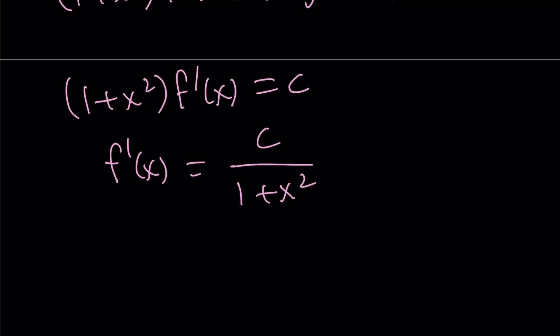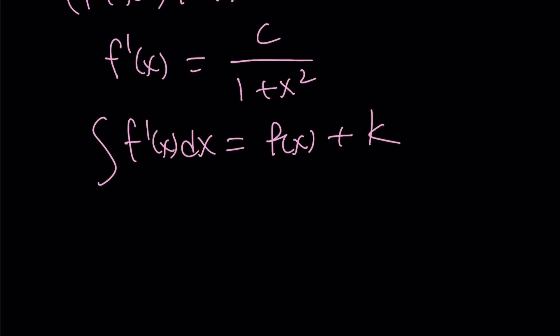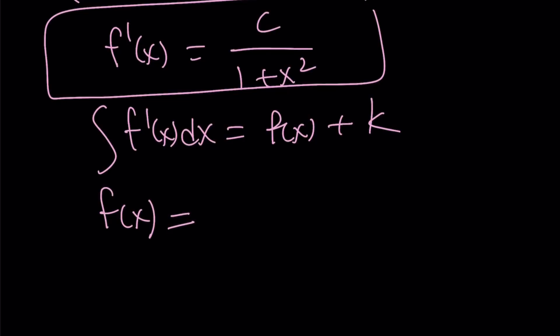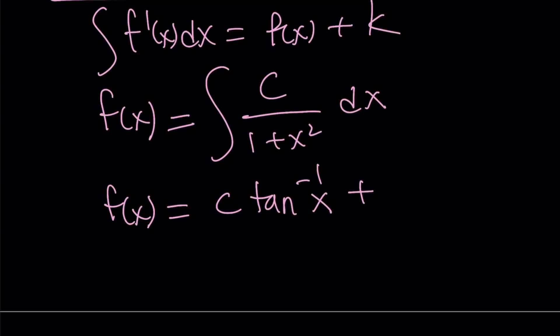From here I can isolate f prime and write it as c over one plus x squared. If you integrate both sides — the integral of f prime dx is f of x plus some constant k — we get f of x on the left. The integral of c over one plus x squared is c times arctangent of x, which some people call tan inverse. So we can write f of x as c times tan inverse of x, plus a constant k.